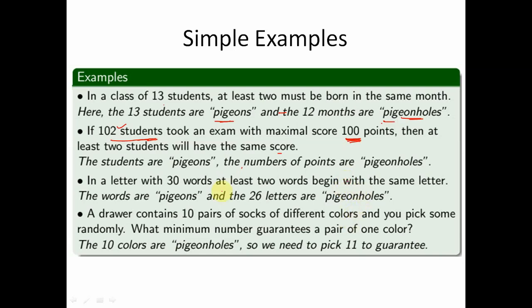Another example: in a letter with 30 words, at least two words begin with the same letter. There are 26 letters in the English language — those are the pigeon holes — and 30 words are the pigeons. Since the number of words exceeds the number of letters, at least two words will begin with the same letter.